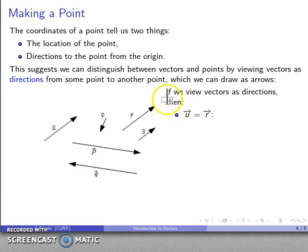We might say that u and r are the same vector. The spatial position of the vector is not important—where we happen to draw the vector doesn't matter. At the same time, if we view vectors as directions, p and q have to be regarded as different. P goes this way, q goes that way.